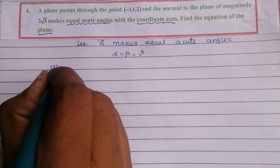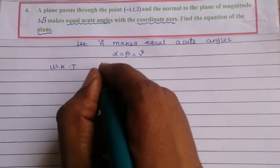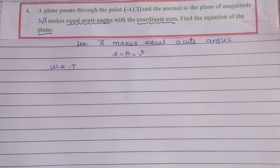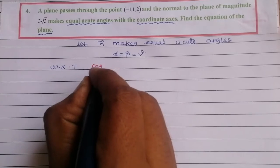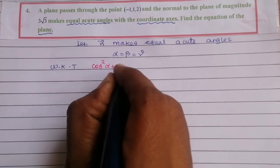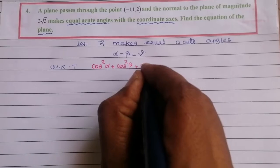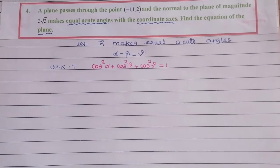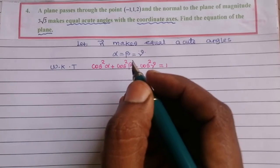We know that the sum of the squares of the direction cosines is equal to 1. That is cos²α + cos²β + cos²γ = 1.